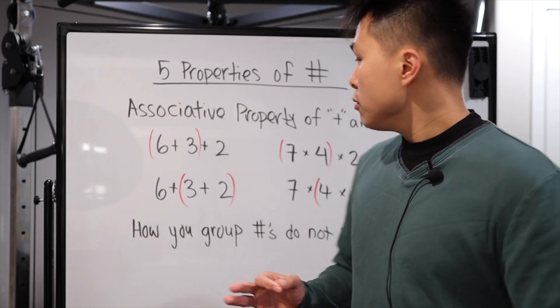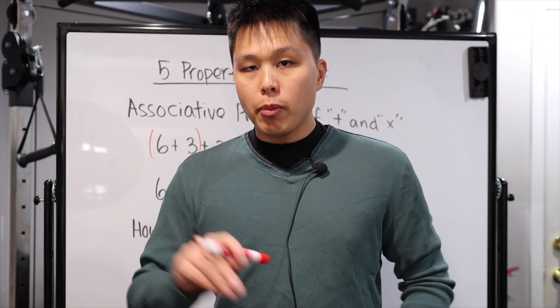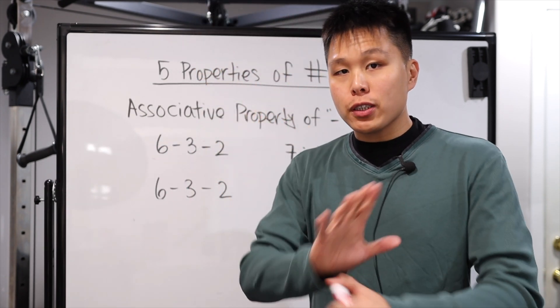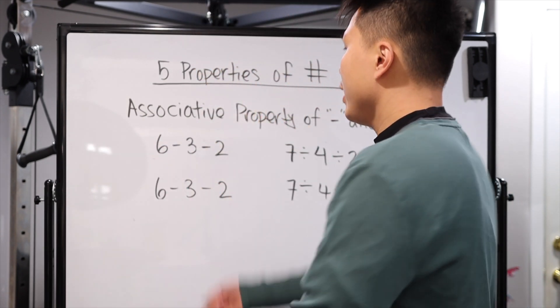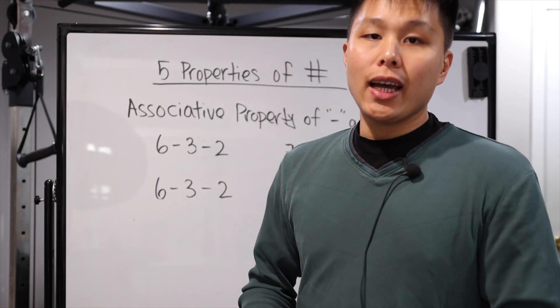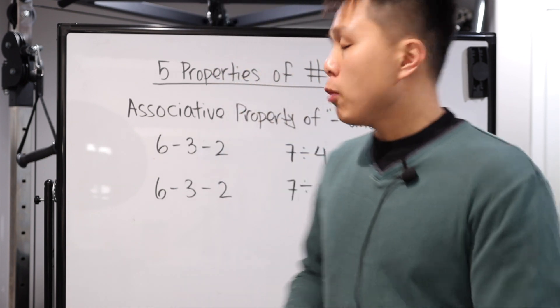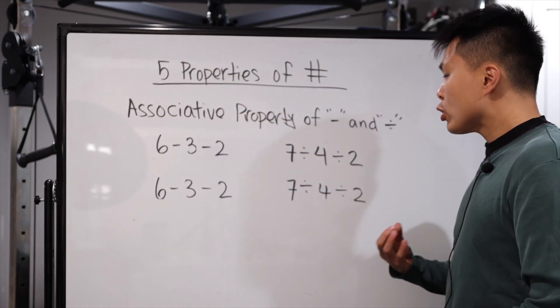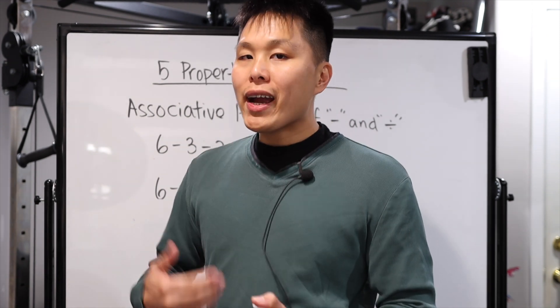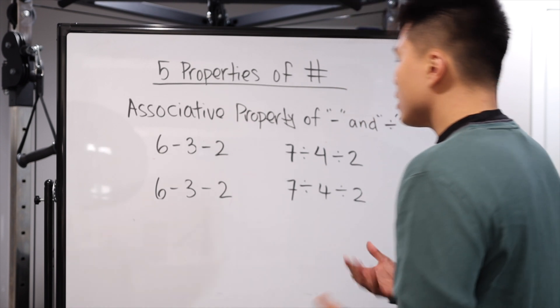Now, here's the key. It only works with addition and multiplication. Let's talk about a common mistake. So this is a common mistake. Do not do this. You will get the wrong answer. We assumed, and we know, at least to a certain extent, that associative property works for addition and multiplication. Since subtraction and division are closely related to addition and multiplication, why does associative property not work for them? Well, we can see it.